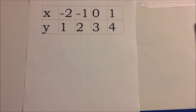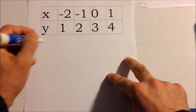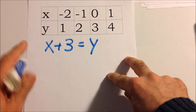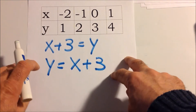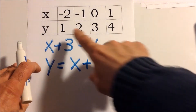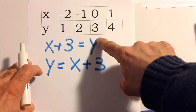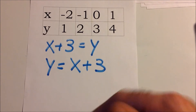Here's another function box — see if you can find the rule. The rule could be addition, subtraction, multiplication, or division. Here we can see it's addition: if you add 3 to x you get y. So the equation is y equals x plus 3. Negative 2 plus 3 is 1, negative 1 plus 3 is 2, 0 plus 3 is 3, and 1 plus 3 is 4.